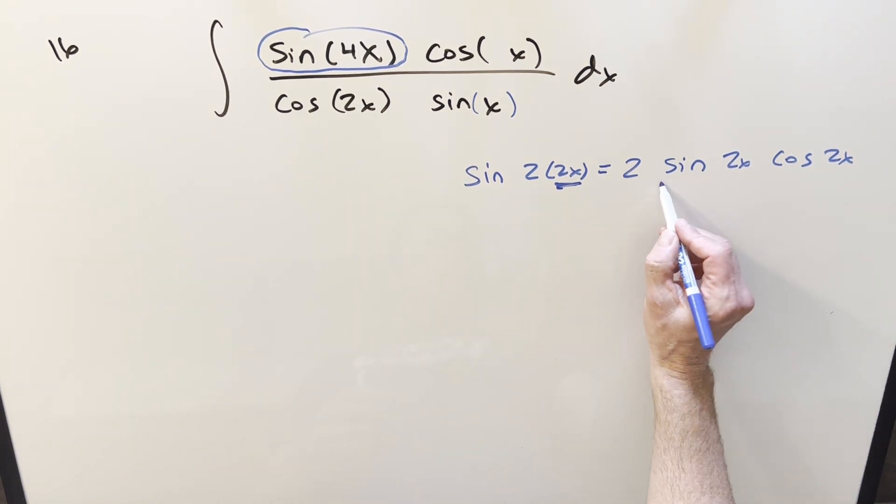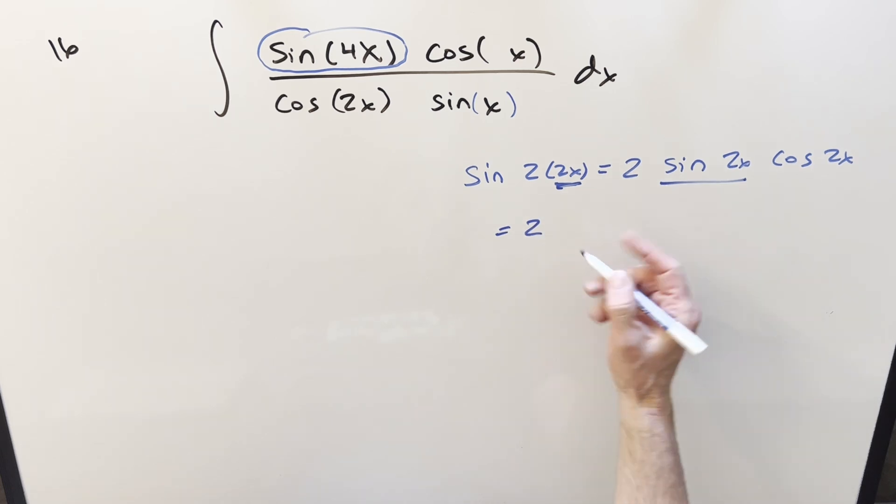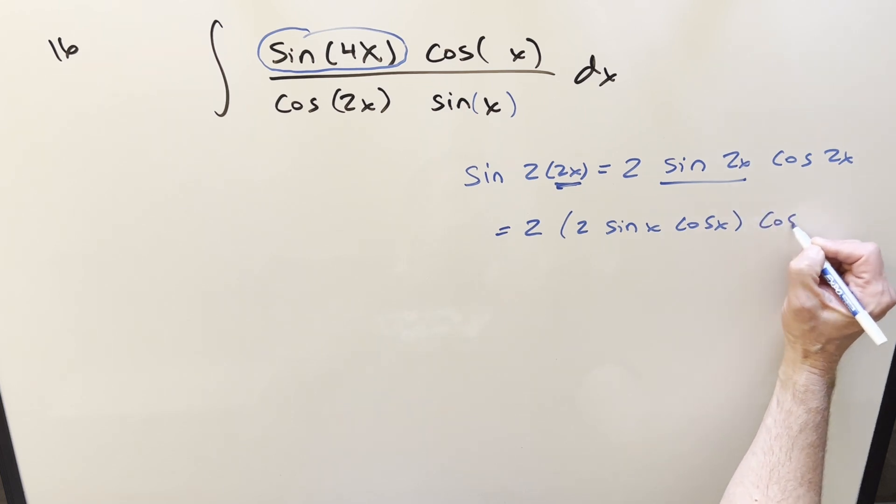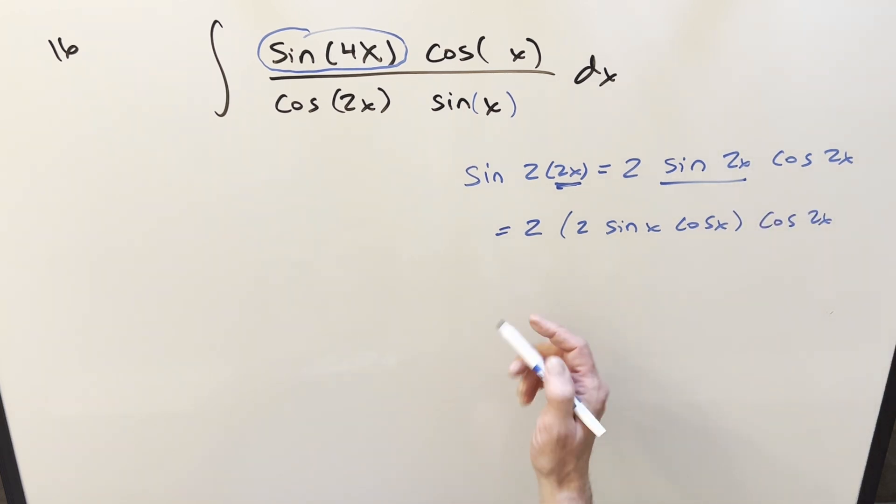But then I can use the double angle formula again on this. Doing that and rewriting it, we have 2. This thing is going to become 2 sine x cos x times cosine 2x. But then multiplying that together, we're going to get a 4. And then let's put it back into the integral and see what we've got left to do.